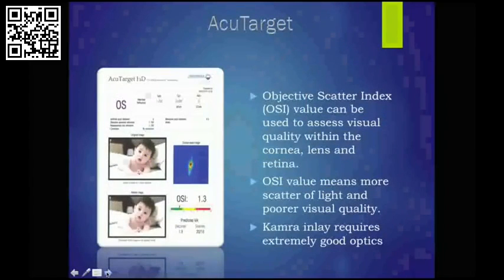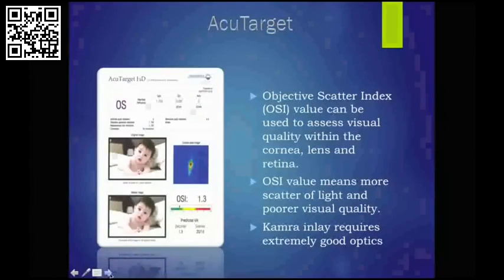Objective scatter index — this is a value used to assess visual quality. A higher OSI value means there's more scatter of light and poor retinal image quality. The camera inlay requires extremely good optics. This is a very nice objective way to get a lenticular assessment — it's basically wavefront from the cornea back to the retina.